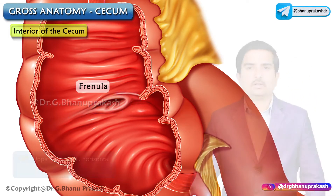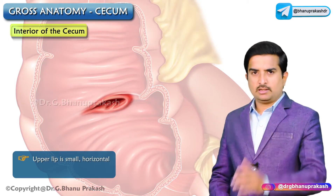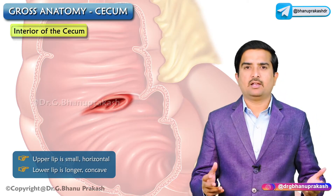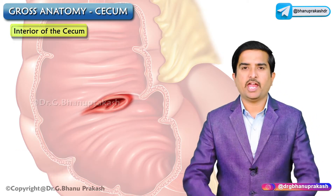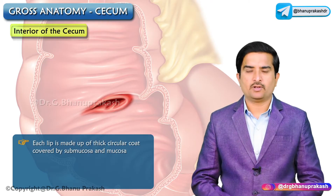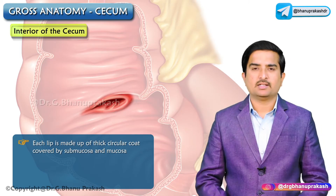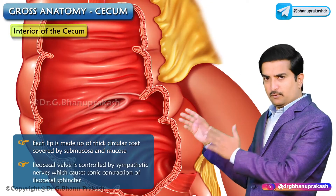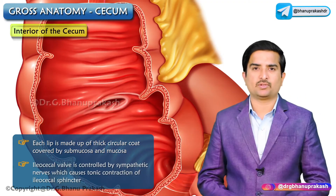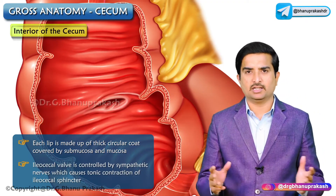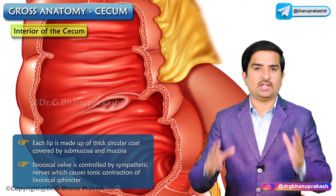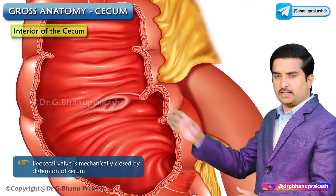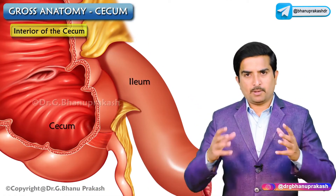The ileocecal valve has two lips and two frenula. The upper lip is small and horizontal, while the lower lip is longer and concave. Both lips lie at the level of the ileocolic junction. Each lip is made up of a thick circular coat covered by submucosa and mucosa. The ileocecal valve is controlled by the sympathetic nervous system, causing tonic contractions of the ileocecal sphincter, and is mechanically closed by distension of the cecum.